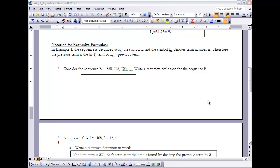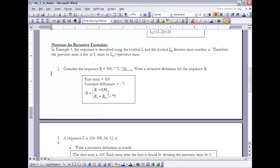Let's take a look at Example 2. It says consider the sequence B: 850, 775, 700. Write a recursive definition for the sequence B. To write that recursive definition, I need to know two things: what is its starting value, and it looks like it's going down by the same amount each time.